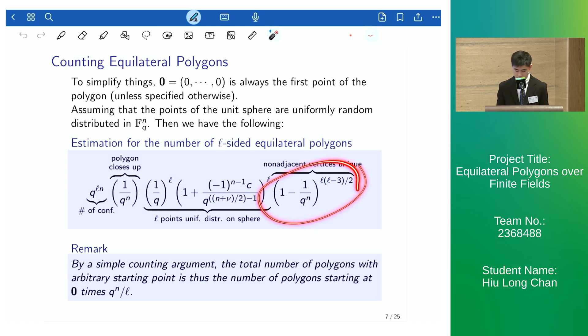Here is the condition that the l points are uniformly distributed on the sphere. Here we impose the condition that the non-adjacent vertices are unique. And we also have this condition that the polygon closes up. If we multiply by the number of configurations, we obtain the whole estimate.